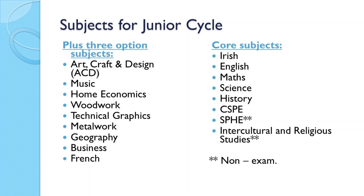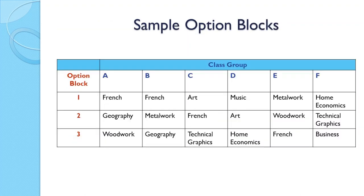The column on the left shows the option subjects. These subjects are divided into three option blocks. Each block will run for a period of usually five to six weeks, where students will get to sample all the option subjects.